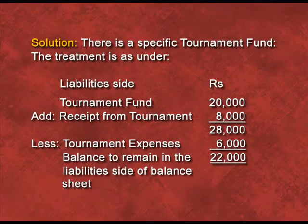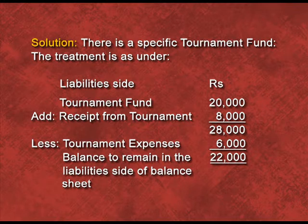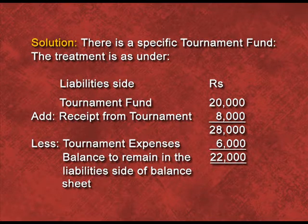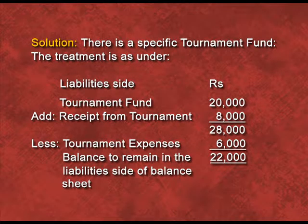Now you can see the accounting treatment. On the liability side, we have to show tournament fund rupees 20000 plus receipts from tournament that is 8000, the total will be 28000, then we will deduct the tournament expenses of rupees 6000, and then we will get the balance of 22000, shown on the liability side of the balance sheet. Specific funds are shown always on the liability side because they are of capital nature.